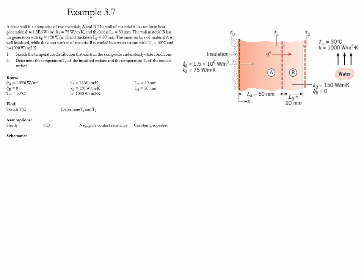The goal of the problem is to sketch the temperature distribution that exists on the composite under the given conditions, and then we need to determine the temperature of the insulated surface, T0, and the temperature of the cold surface, T2. This is a one-dimensional, steady case, in which we neglect the resistance between the contact surfaces between A and B. It would maintain constant properties.